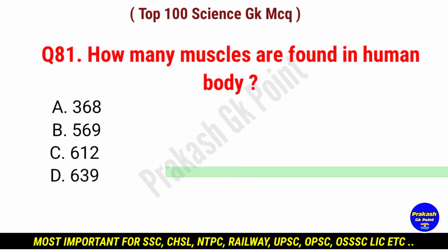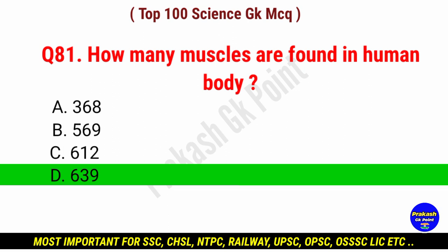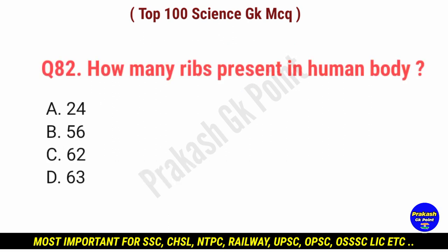How many muscles are found in human body? Answer: option D, 639.